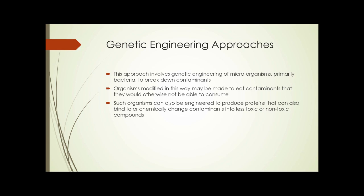There are also genetic engineering approaches that involve engineering microorganisms — primarily bacteria — to break down contaminants. Organisms modified in this way may be made to consume contaminants they would not otherwise be able to process; genes are spliced in that allow them to attack and break down contaminants. They can also be engineered to produce proteins that bind to or chemically change contaminants, offering two distinct approaches to remediation through genetic engineering.